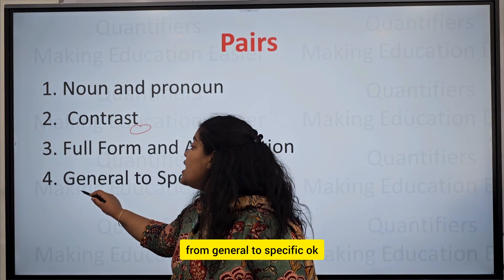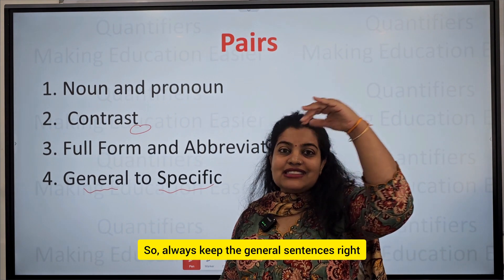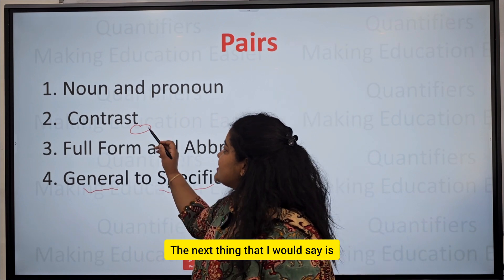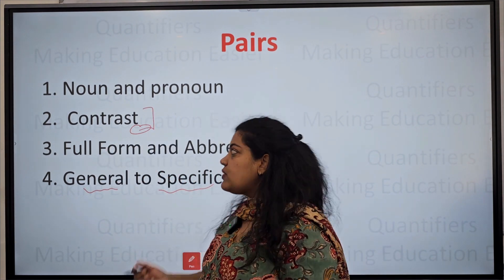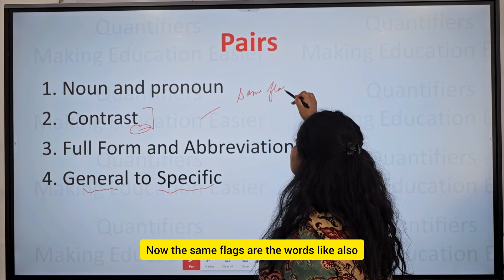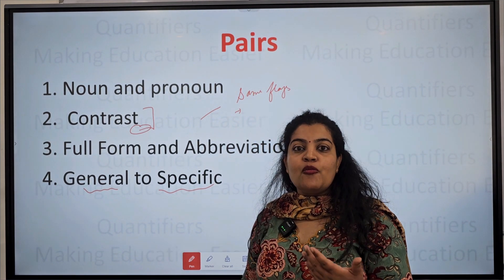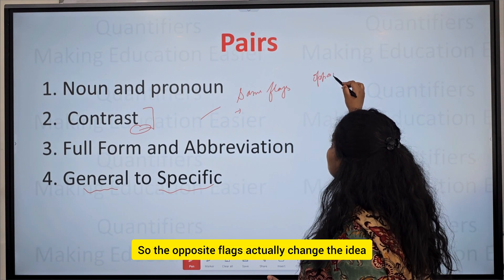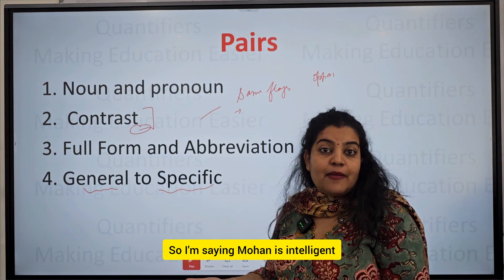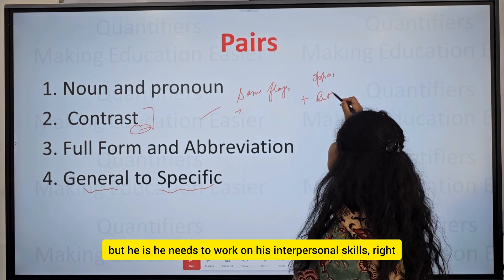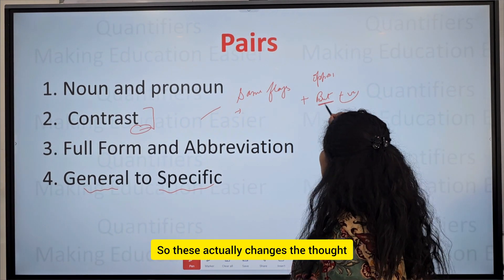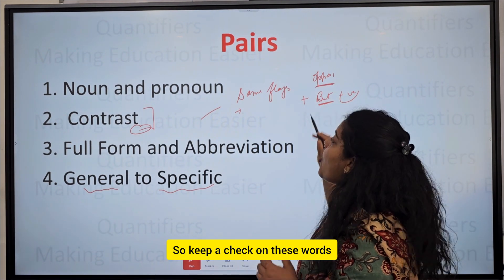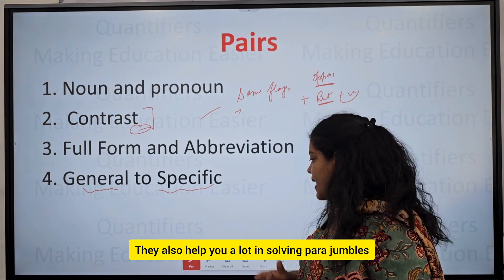Always follow the thumb rule of going from general to specific — keep general sentences at the beginning of the sequence, then move into specific details. Also note the same flags and opposite flags. Same flags are words like 'also,' 'moreover,' 'in addition,' 'furthermore.' Opposite flags change the idea — for example, 'but' introduces a thought reversal. Keep a check on these words as they help a lot in solving para jumbles.